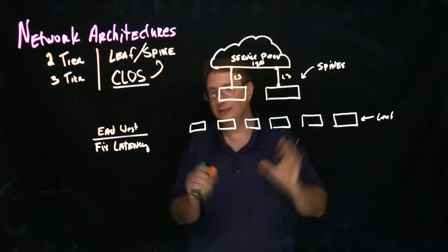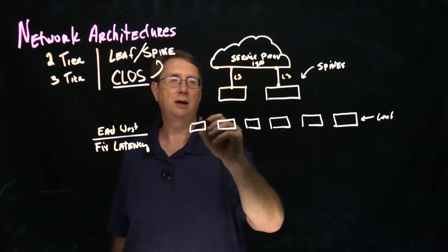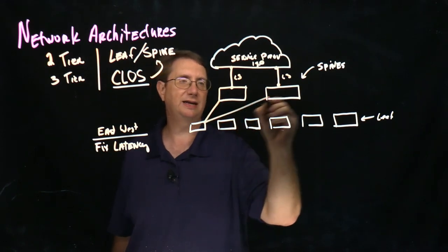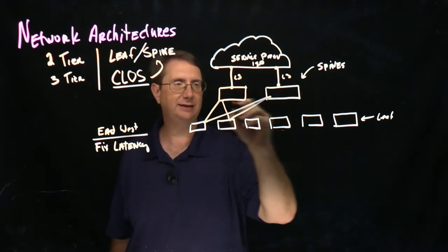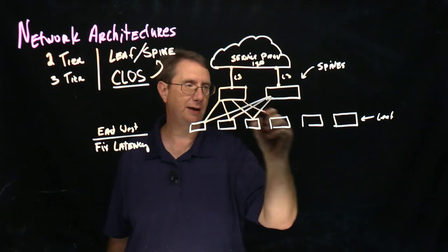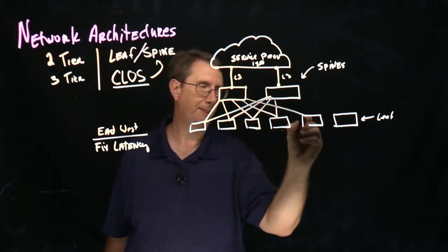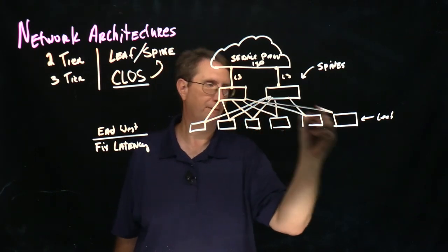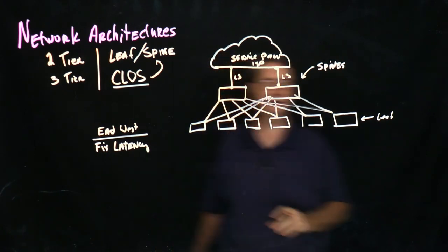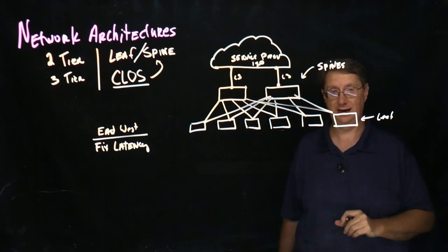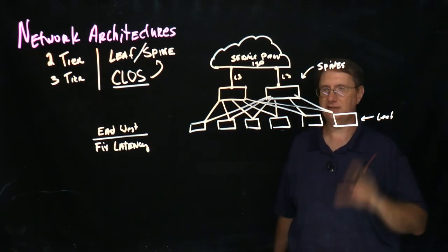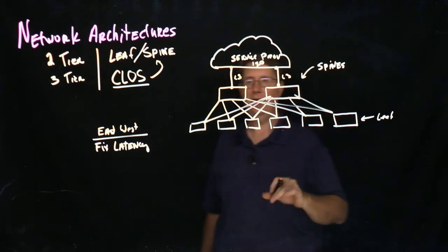Then what I have to do is I have to connect my leaves to my spines. And the way that this happens is that every leaf is connected to every spine. And you should automatically see the first drawback to this design. Cabling gets very, very complex.